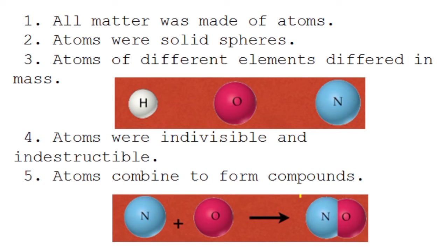Dalton theorized that: 1. All matter was made of atoms; 2. Atoms were solid spheres; 3. Atoms of different elements differed in masses; 4. Atoms were indivisible and indestructible; 5. Atoms combined to form compounds.